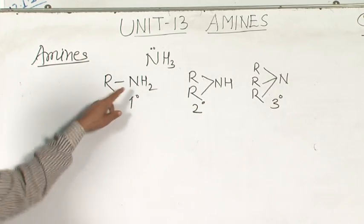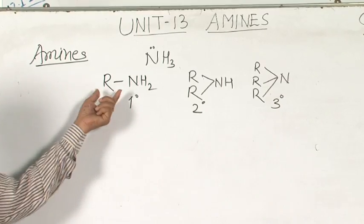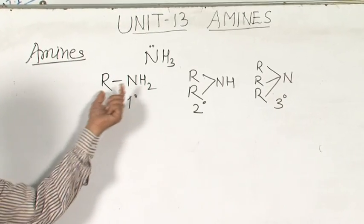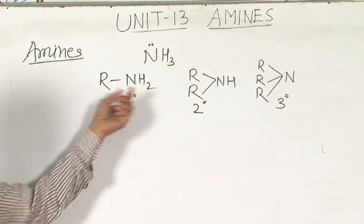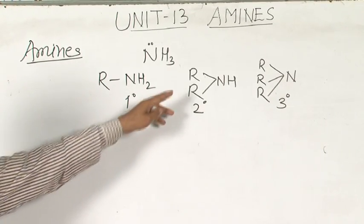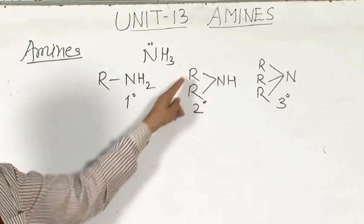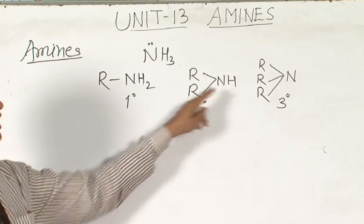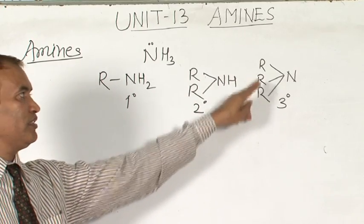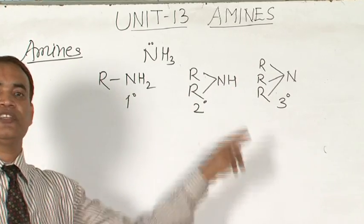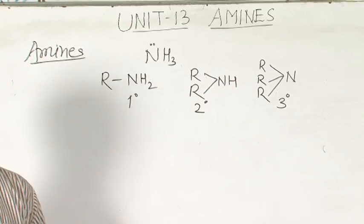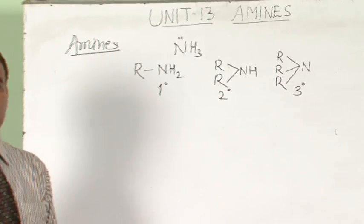In primary amine, one hydrogen is substituted by an alkyl group. In secondary amine, both two hydrogen atoms are substituted, and in tertiary amine, three hydrogen atoms are substituted by alkyl groups.